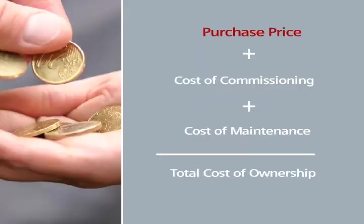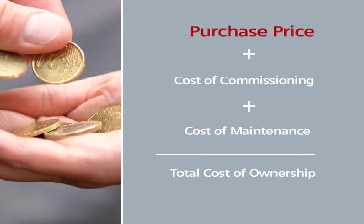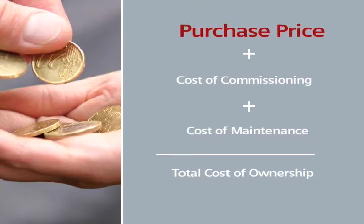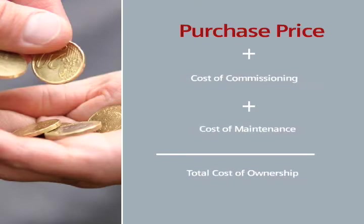Purchase price. Calculating this variable is easy. The cheapest instrument is the one to buy, right? Wrong. The purchase price of the instrument is typically the smallest cost in our equation. However, if you spend a little bit more for an instrument with industrial communications, such as Profibus, you will save a great deal on the cost of commissioning and the cost of maintenance. Let's look at these two costs in greater detail.